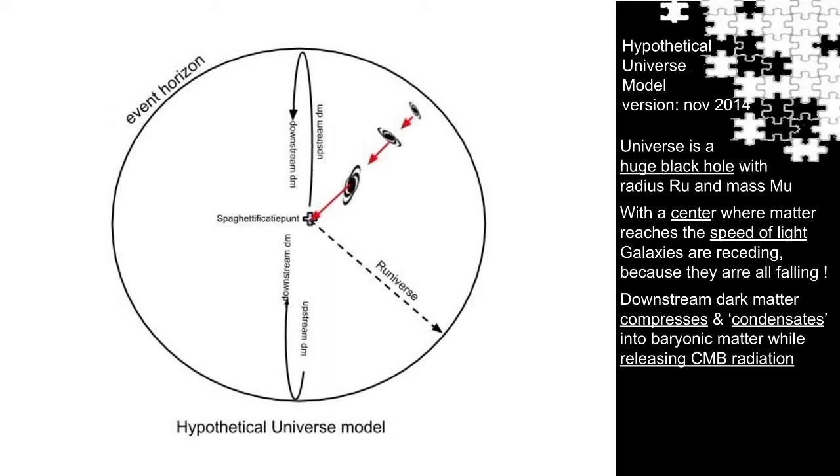And what about condensation of dark matter? Again, this model gives an answer how dark matter can condensate and suggests an interesting property of gravity inside the universe. As dark matter falls, it follows the gravity field lines which are focused to the center. That is the reason why dark matter will be compressed and condensate into baryonic matter during its fall.